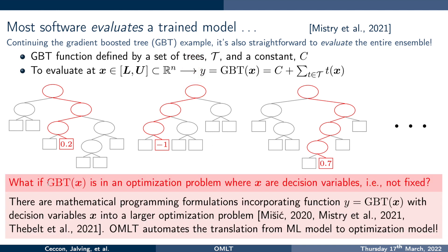But what if, and this is the omelette setting, the trained gradient boosted tree is in an optimization problem, and now the X, or the inputs, are decision variables. They're not fixed anymore, and there are mathematical programming formulations incorporating Y is equal to GBTX with decision variables X into a larger optimization problem. This is a solved item, and people know how to do this. However, it can be annoying to program, and omelette is going to automate the translation from this machine learning model to an optimization model.